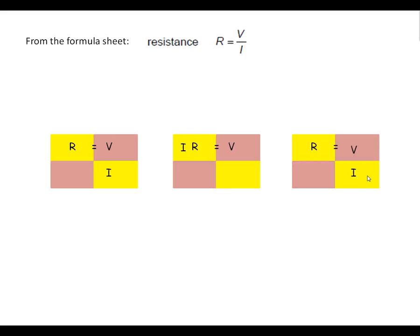Write it again. Let's rearrange it to find I. This time, I's on the bottom, but we need to get it on the top. So let's move it up to here, to the other yellow square. As long as it stays in the same color, that's fine.